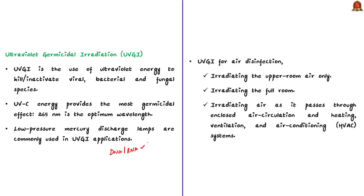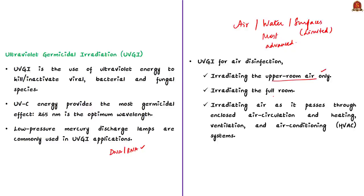Ultraviolet germicidal irradiation can be used to disinfect air, water and even surfaces. Usually surface disinfection is quite limited; water disinfection is currently the most advanced and accepted germicidal application; and air disinfection is also accomplished through this irradiation method. There are several methods — irradiating the upper room air only, irradiating the entire room, or irradiating the air as it passes through enclosed air circulation and HVAC systems. This news article mentions the usage of ultraviolet germicidal irradiation in the air conditioning system of Rajya Sabha for killing microbes in the air supply.